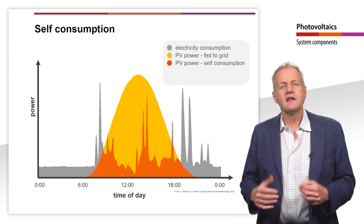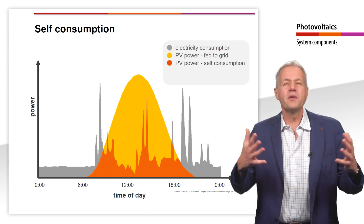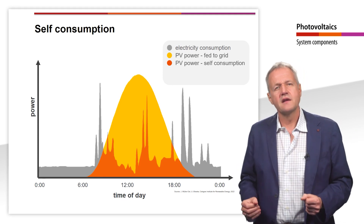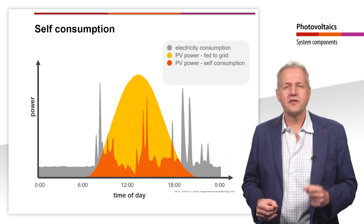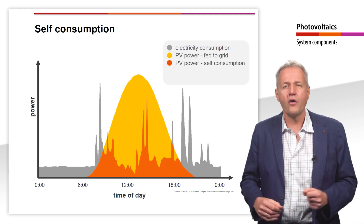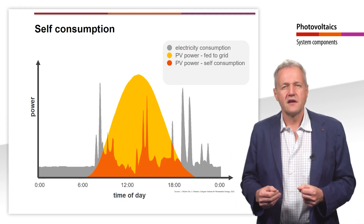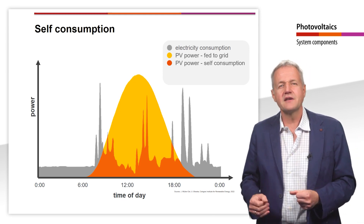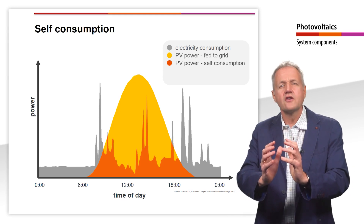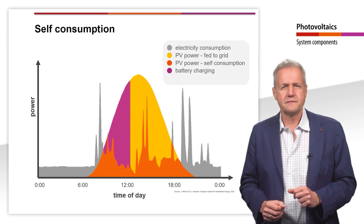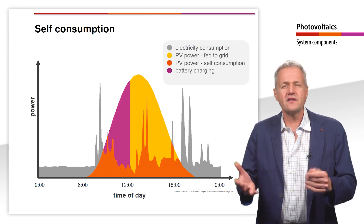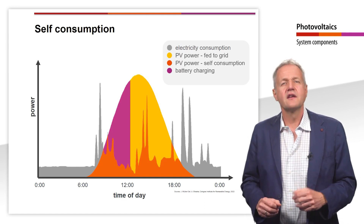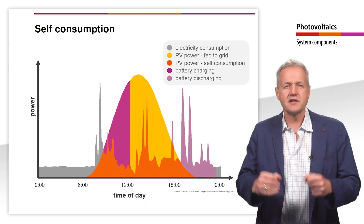However, in the morning and in the evening hours, no PV electricity is available and electricity must be drawn from the grid. This is where an idea comes in that is being implemented in more and more newly built PV systems: instead of feeding the surplus electricity into the grid during the sunny midday hours, it is temporarily stored in a battery storage system. In the evening or when the sun is not shining and the production of solar power decreases, the electricity demand can be covered by the storage.